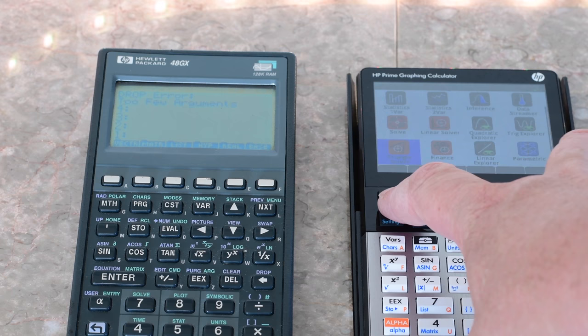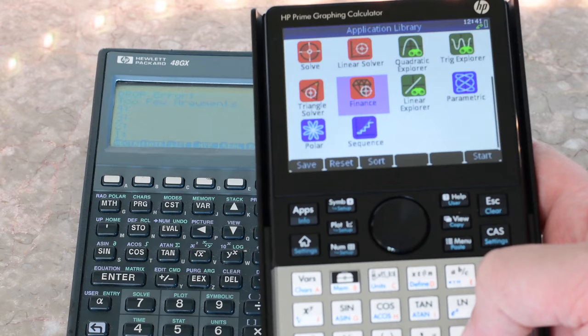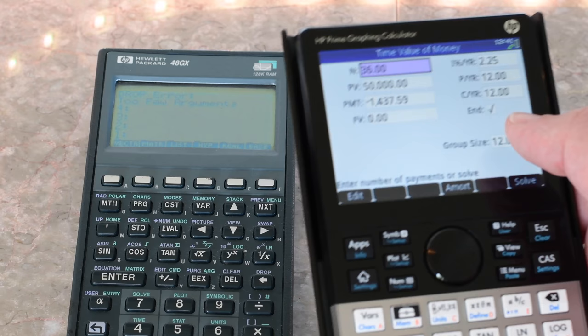Of course you have this big color LCD screen, and on it you have lots of apps, like maybe they're trying to pretend like they're a smartphone. But you can see these have many of the old ones, like finance.